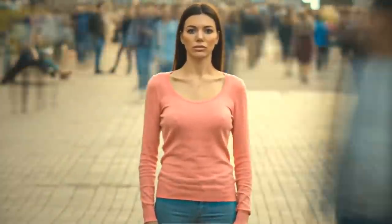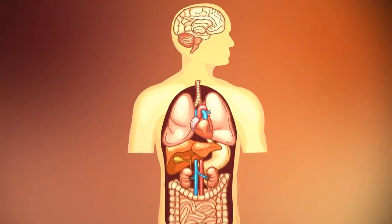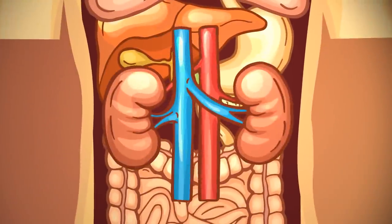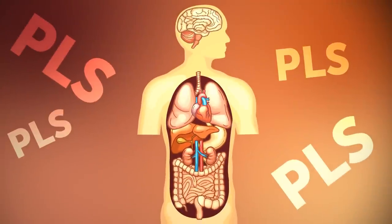Human beings, that's you and me, have five vital organs that we need to survive. The brain, heart, kidneys, liver, and lungs. Take care of them, please!